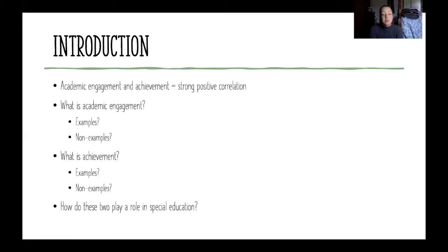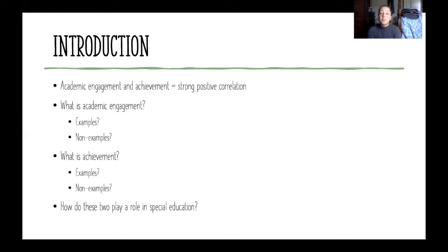How do these two play a role in special education? Both are very important. The article shows that because a student has a disability, it can result in low rates of engagement. So teachers will need to provide extra support and extra strategies to help the student engage fully and reach their desired level of achievement.